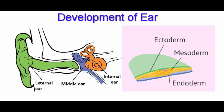The development of the ear can be divided into that of the external ear, middle ear, and inner ear. The ear is developing from all three germinal layers — ectoderm, endoderm, and mesoderm — and each anatomical division has a distinct origin and unique developmental process.